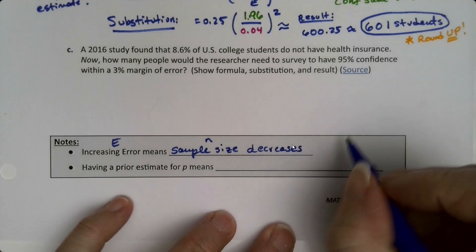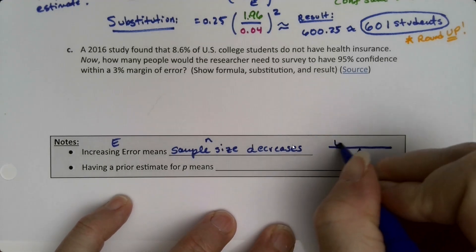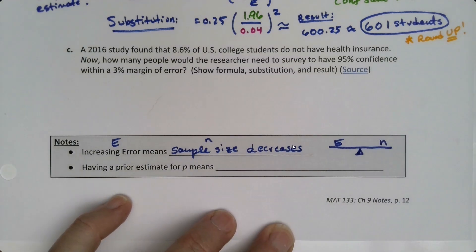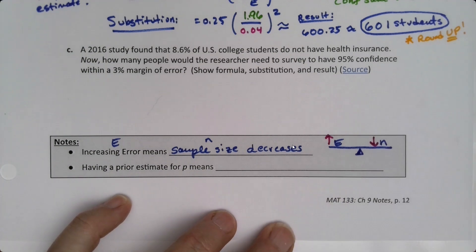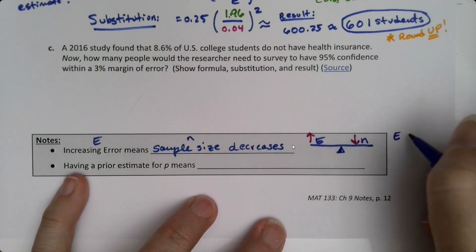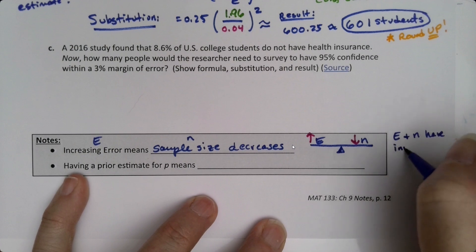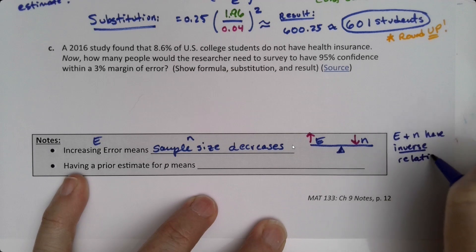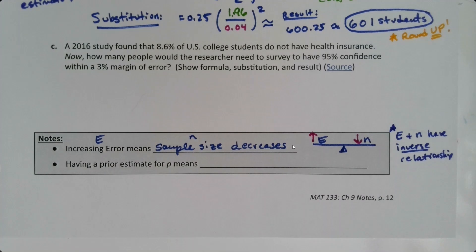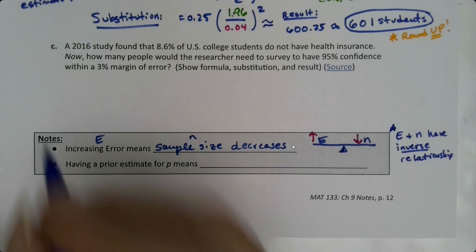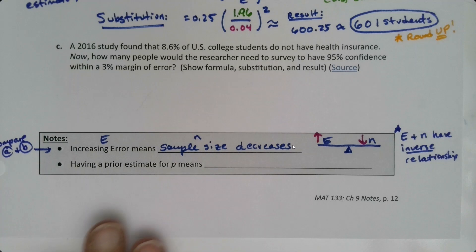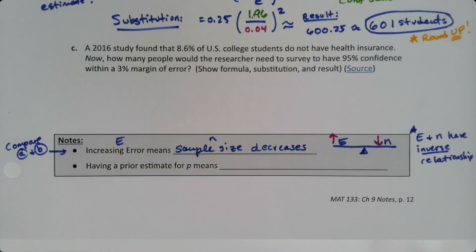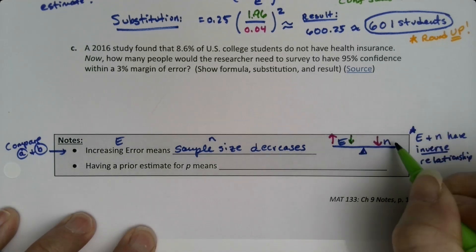Think of it like a teeter-totter: error on one side, sample size on the other. When error went up from 0.03 to 0.04, n went down — that's an inverse relationship, a term we learned back in chapter four. It works in both directions: if your error goes down, your n will go up.